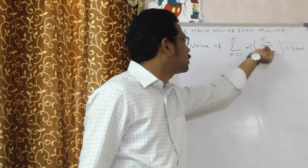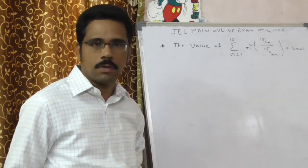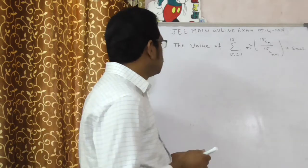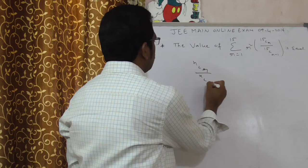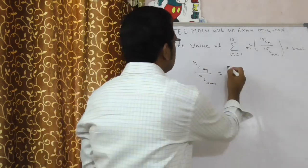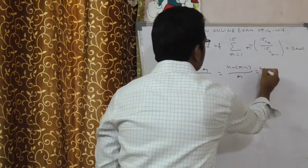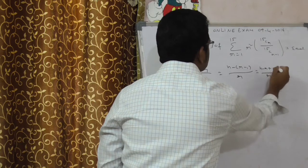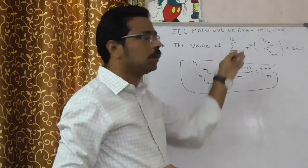Observe here in the given expression you have 15Cr by 15Cr-1. By observing this, you have one basic formula that is nCr by nCr-1. What is nCr by nCr-1? That is n minus r minus 1 by r. This is nothing but n minus r plus 1 by r. Just apply this formula there. You get the answer.